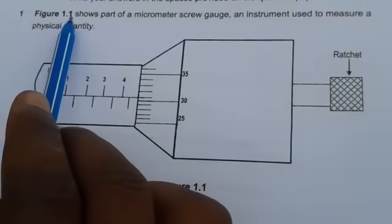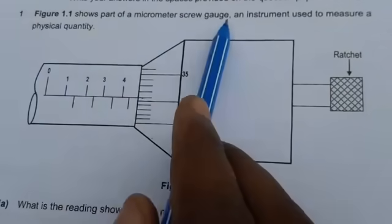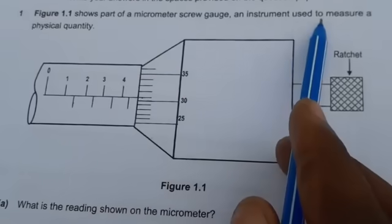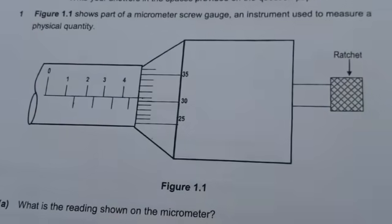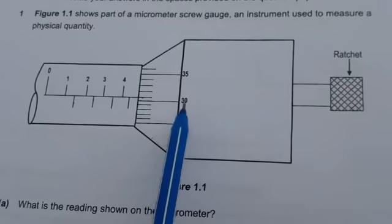The first question says figure 1.1 shows part of a micrometer screw gauge, an instrument used to measure a physical quantity. So this is the micrometer screw gauge.